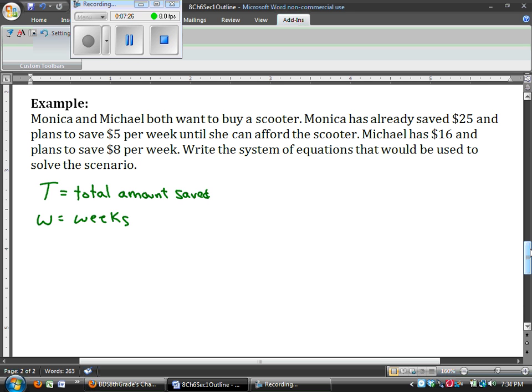So those are my two variables. Now I need to set up my two equations. So I can look first at Monica's equation. She saved $25 and plans to save $5 per week. So that's telling us that the total amount is equal to $25 saved already plus $5 for every week. And if we look at Michael's equation, we see that the total he has saved is $16 plus $8 every week. And there are the two equations.